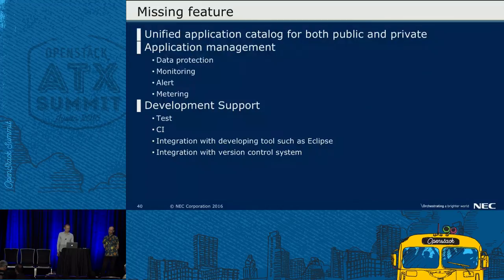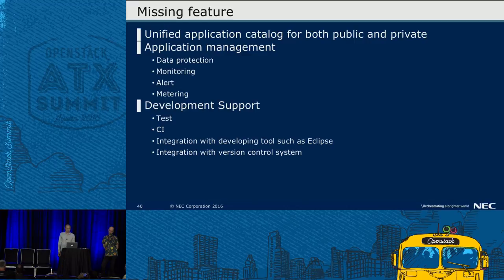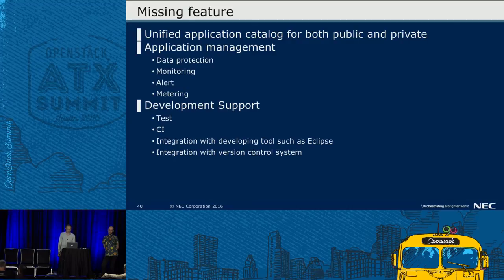Conclusion: we saw four projects, but there are missing features. Some features are accomplished by integrating with other projects or writing programs. First, unified application catalog for both public and private. Second, application management: data protection, monitoring, alert, and metering. The Solum project, application data protection as a service, is targeting data protection. Monitoring, alert, and metering may be achieved by Ceilometer or Monasca, depending on your environment.